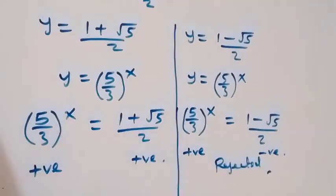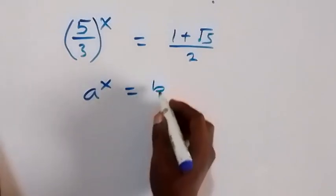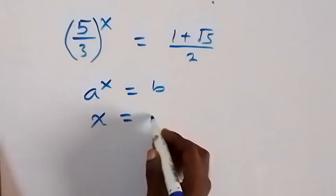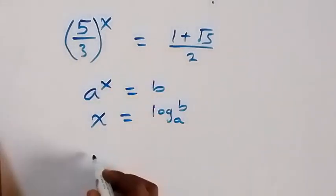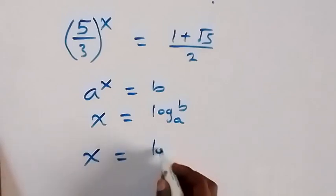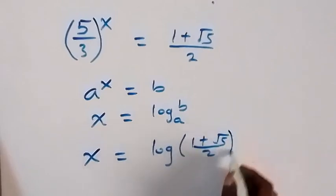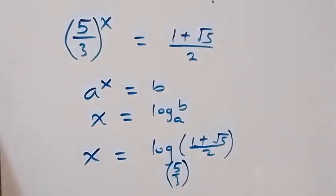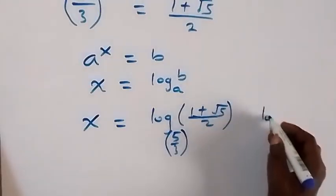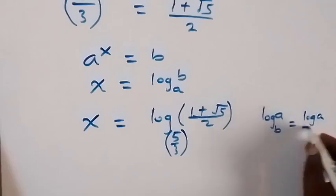From the relation a raised to power x equals b, x is the same thing as log b to base a. So similarly here, x equals log of (1 plus root 5 over 2) to base (5 over 3). And we can use change of base: log a to base b is the same as log a over log b.